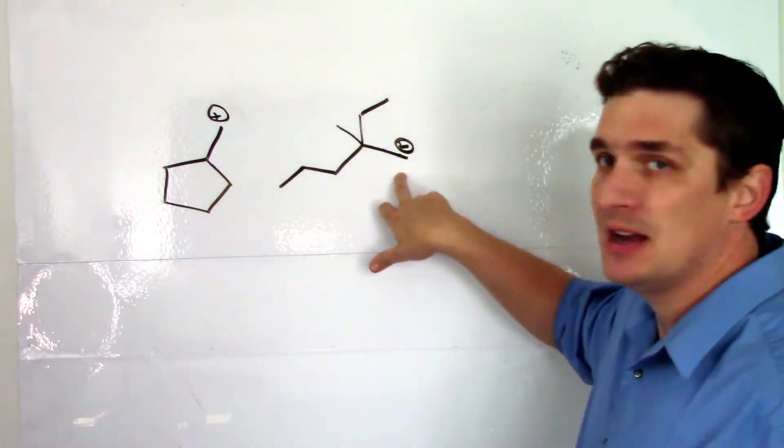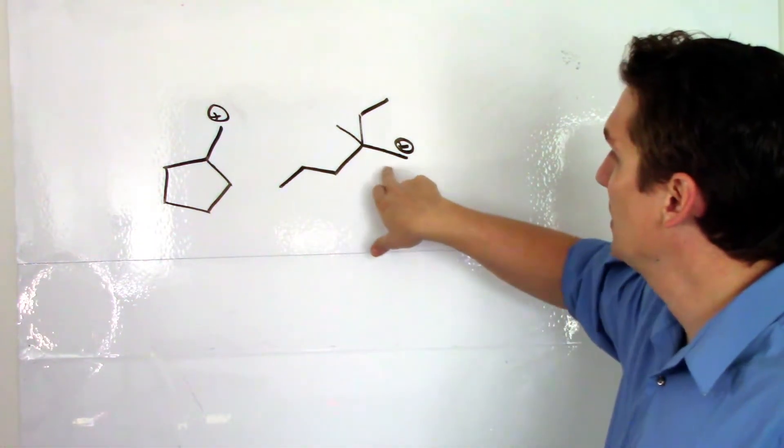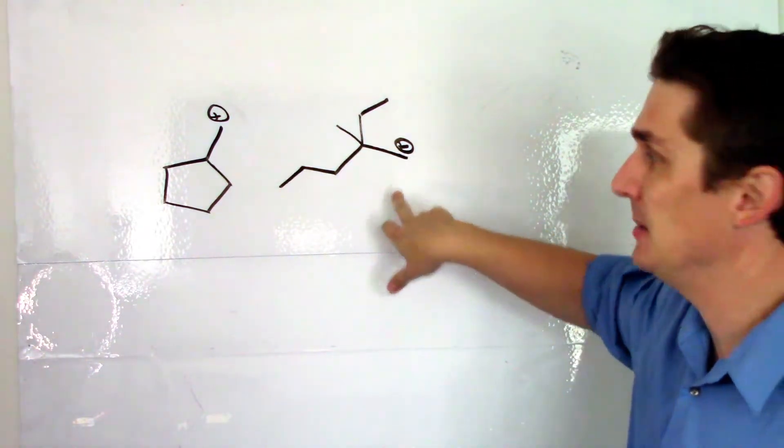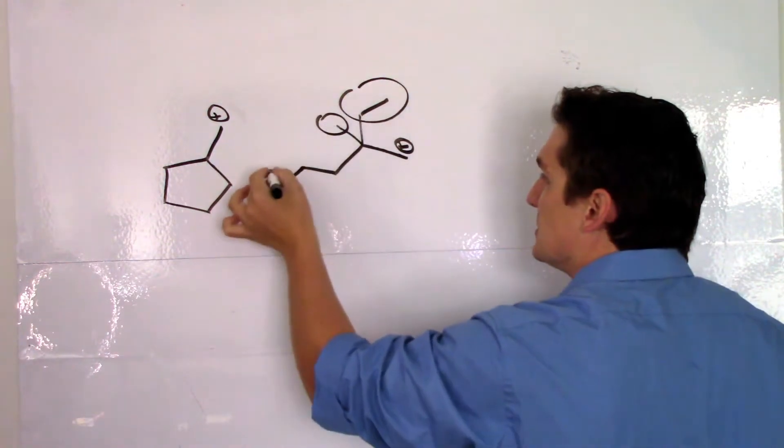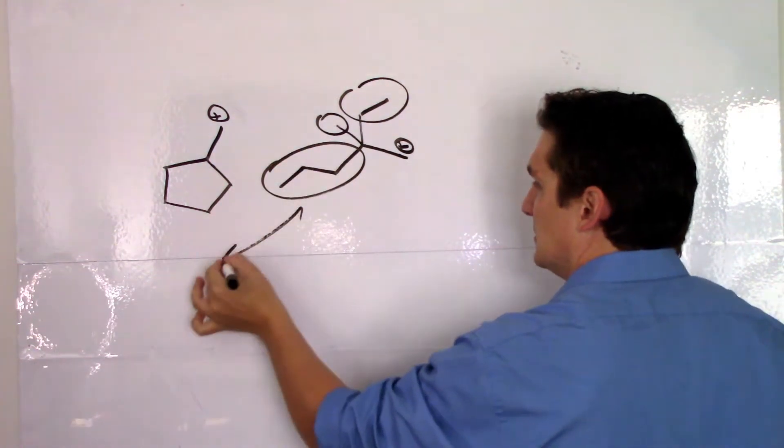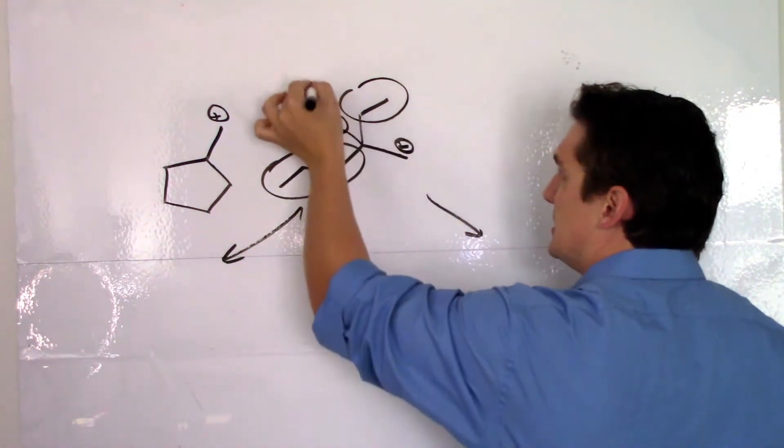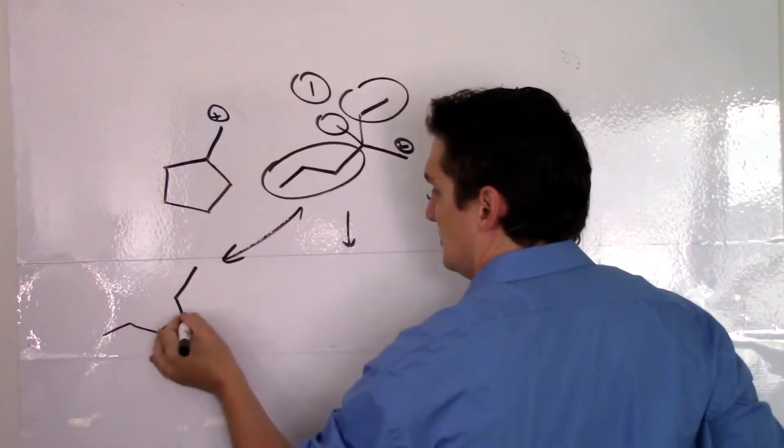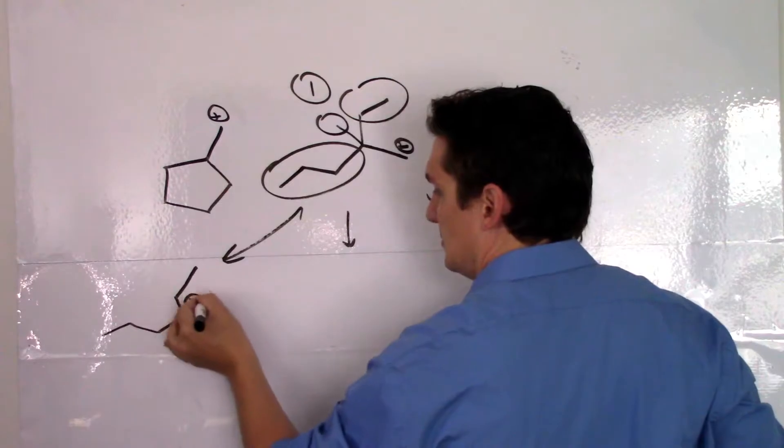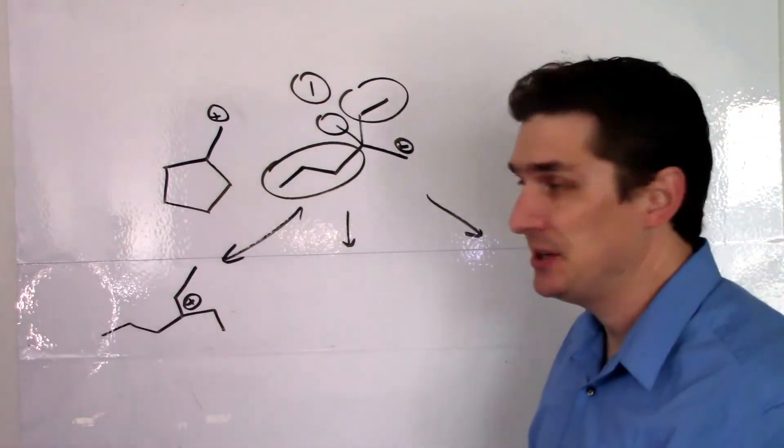Let's say we take this compound here - we've got a quaternary carbon next to a primary carbocation and we could move three groups. So let's say we move the methyl group. This would give us a tertiary carbocation.